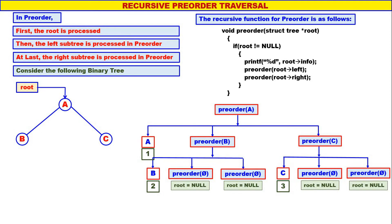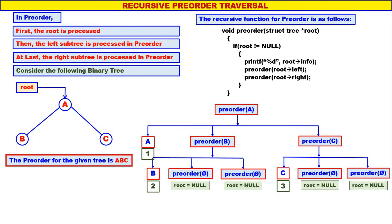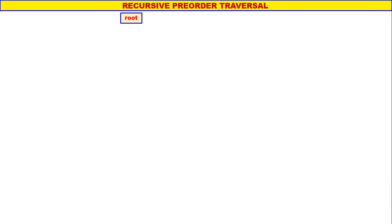So, what is the first one to be displayed? A. Second one is B. Third one is C. Therefore, the pre-order for the given tree is A, B, C. Quite simple and straightforward. Now, let us consider another tree — a little bigger tree.